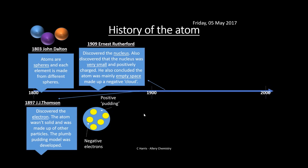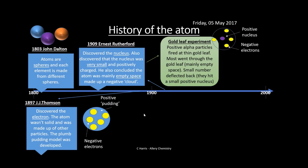Ernest Rutherford then discovered the nucleus and found that it was really, really small and contained positive charges. He said most of the atom is empty space because the nucleus was so small, and he described a cloud of electrons surrounding the nucleus — starting to resemble the atom we know today. He proved this with the gold leaf experiment: he fired alpha particles at a thin piece of gold leaf, and most went straight through, confirming empty space. A very small number deflected back, meaning they'd hit a small positive nucleus — because an alpha particle is positively charged, it bounced back.